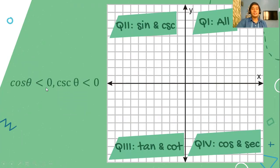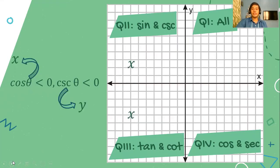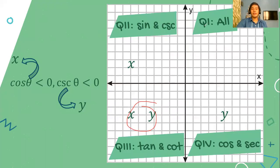Let's have the next example. Cosine theta is negative and cosecant theta is negative. Cosine theta becomes negative on the second quadrant and on the third quadrant. For cosecant theta, we refer to sine theta — sine theta is negative on quadrant three and four. Since there is a common value in quadrant three, therefore quadrant three is the correct answer.